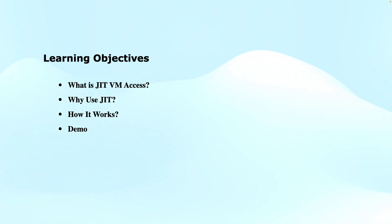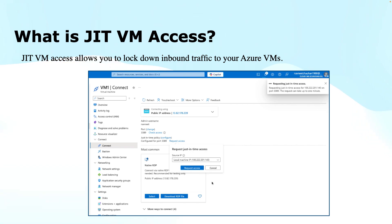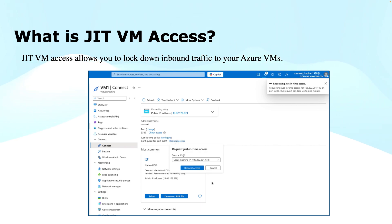Without any further ado, let's get started. What is Just-in-Time VM Access? It is a feature of Microsoft Defender for Cloud which allows you to lock down the inbound traffic to your Azure virtual machines, instead of leaving ports like RDP or SSH ports open all the time. Just-in-Time VM Access lets you open them only when required and only to specific IP addresses or CIDR blocks.